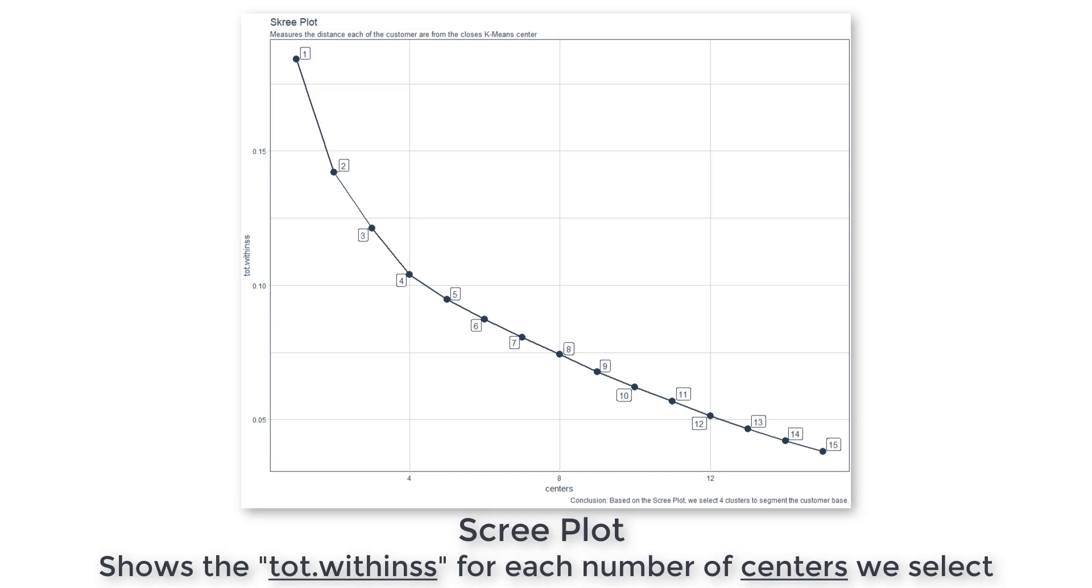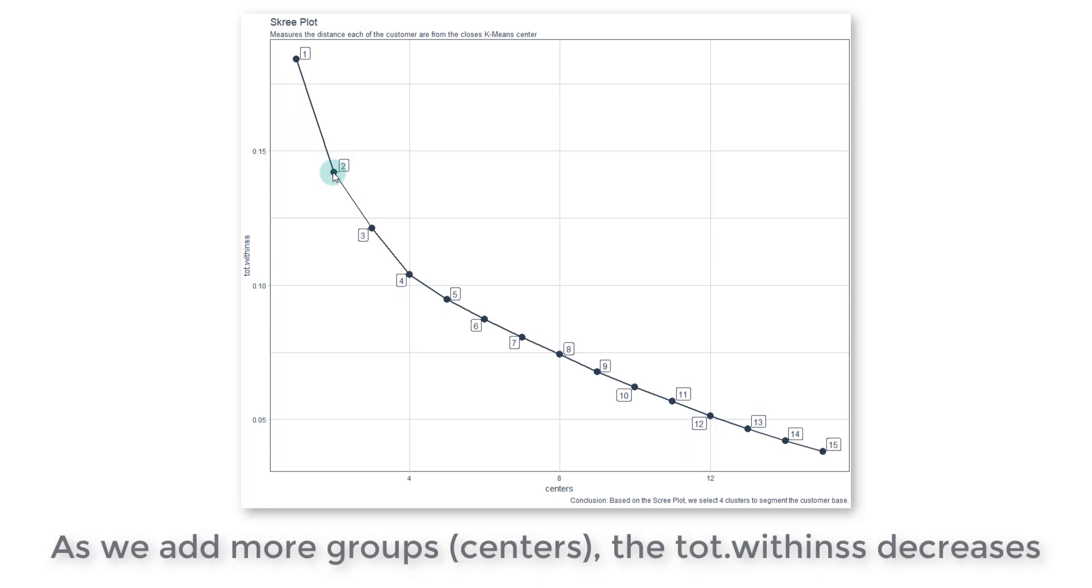And then we're going to compute this thing called total within SS, and that stands for total within sum of squared error. So basically what it's going to do is compute a distance measurement that is called the sum of squared error. For example, for one center, this is what the sum of squared error is. When we split it up into two groups, that error drops down. And for three groups, it drops down even further. And for four groups, it drops down more.